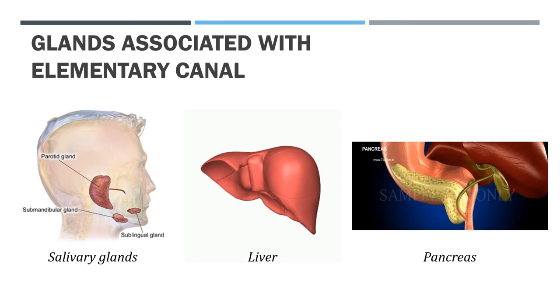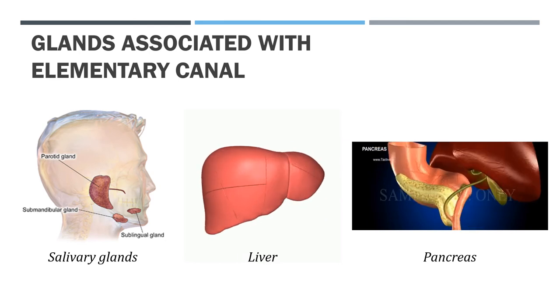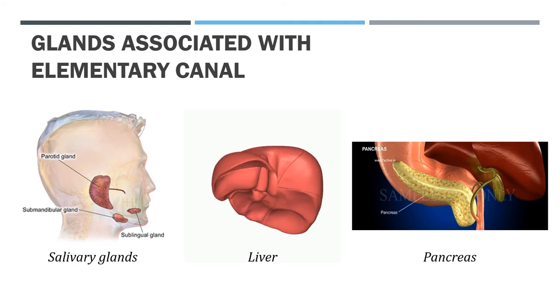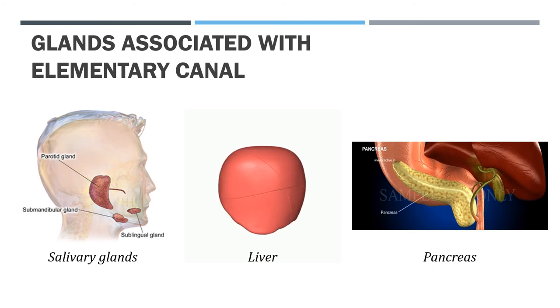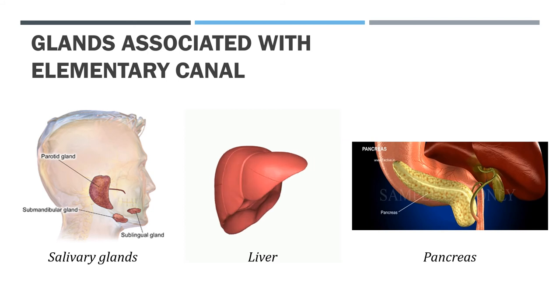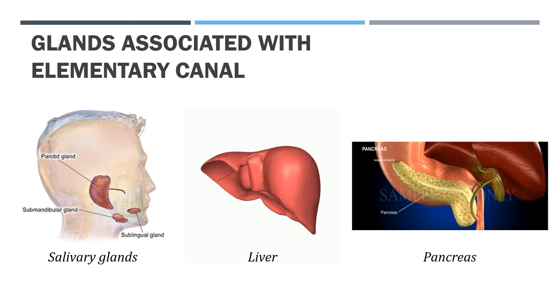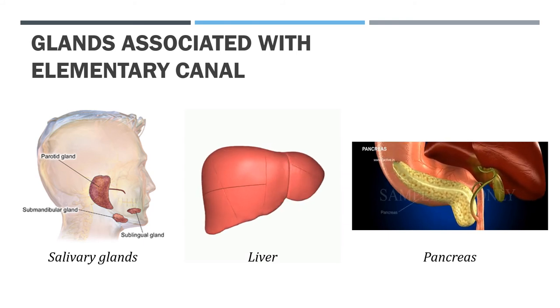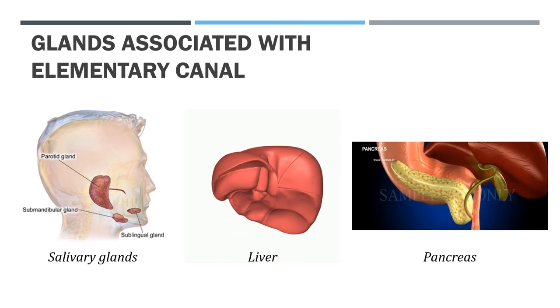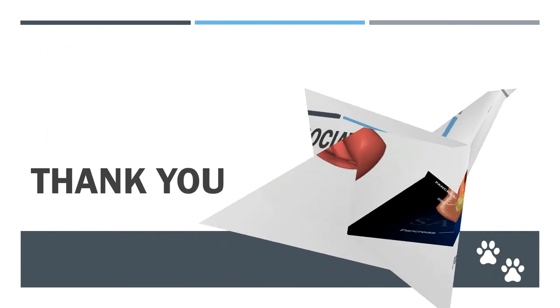The inner walls of the stomach and the small intestine, and the various glands associated with the canal such as salivary glands, the liver and the pancreas, secrete digestive juices. The digestive juices convert complex substances of food into simpler ones. The digestive tract and the associated glands together constitute the digestive system. Let us learn what happens to the food in different parts of the digestive tract in the next class.